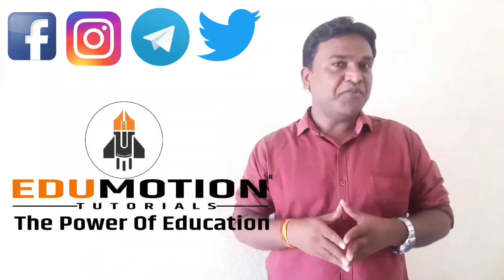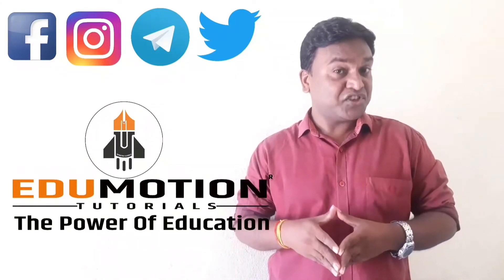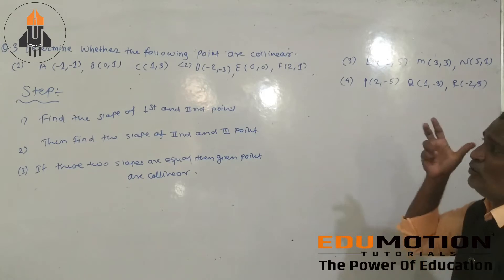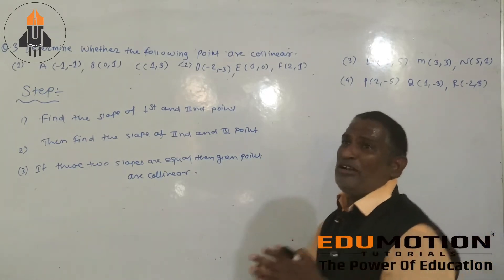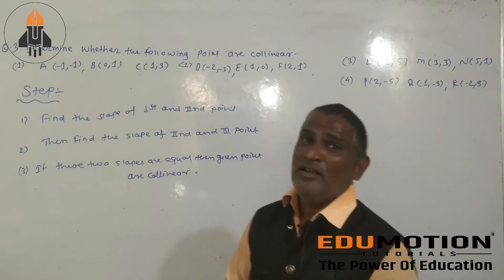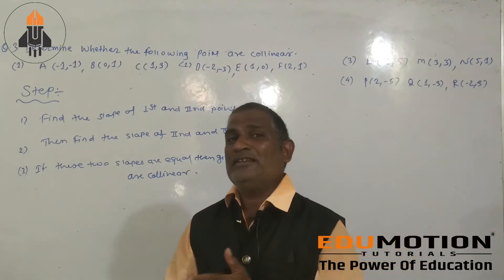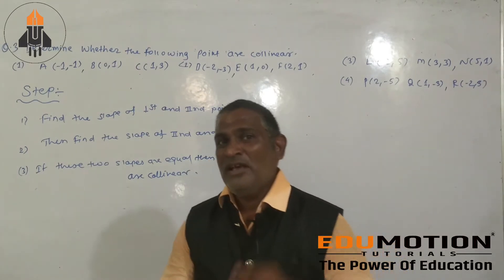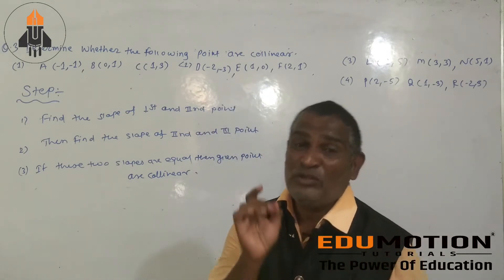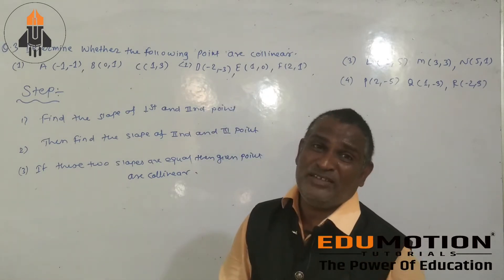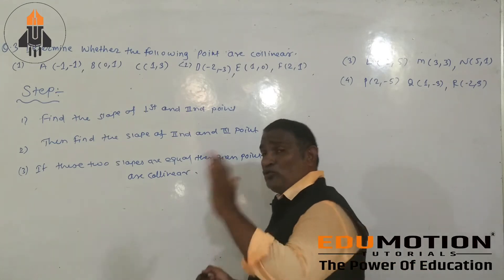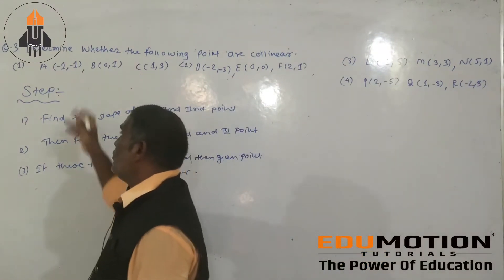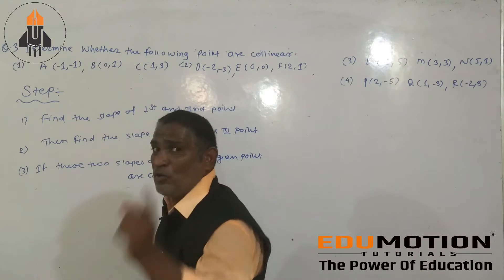Now let's determine why points are collinear. If you have three points and these three points are collinear, you can use the distance formula — if AC equals AB plus BC, the points are collinear. Or you can consider how to solve this type of problem by using slope. We have to find the slope and then show whether the points are collinear or not.